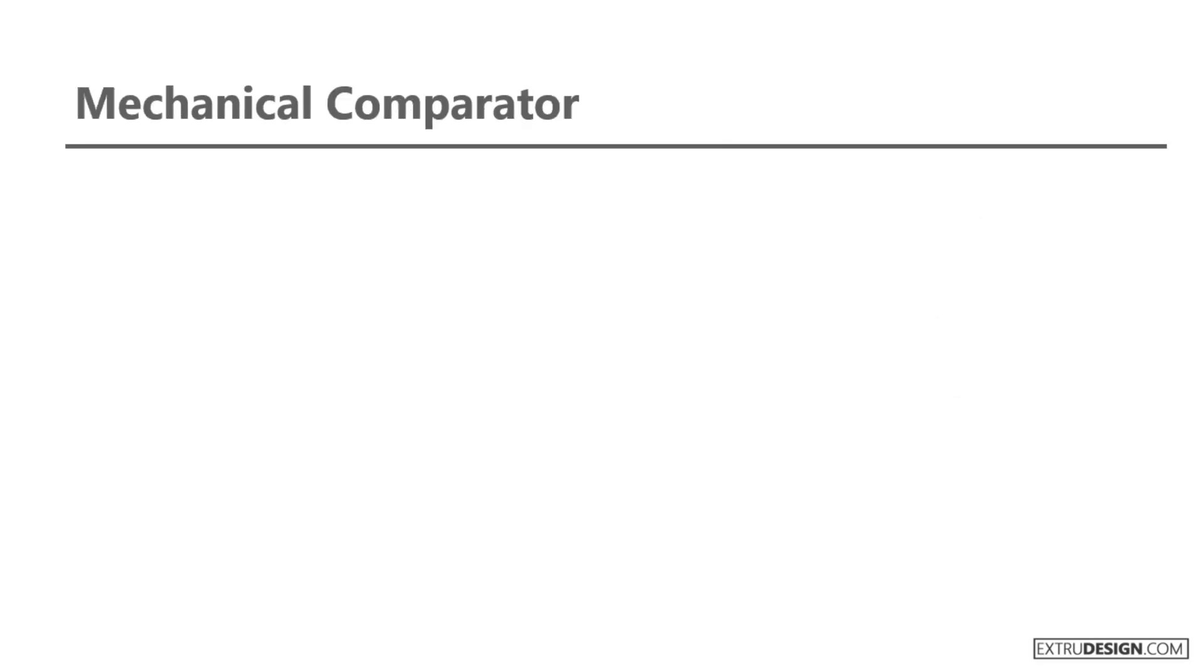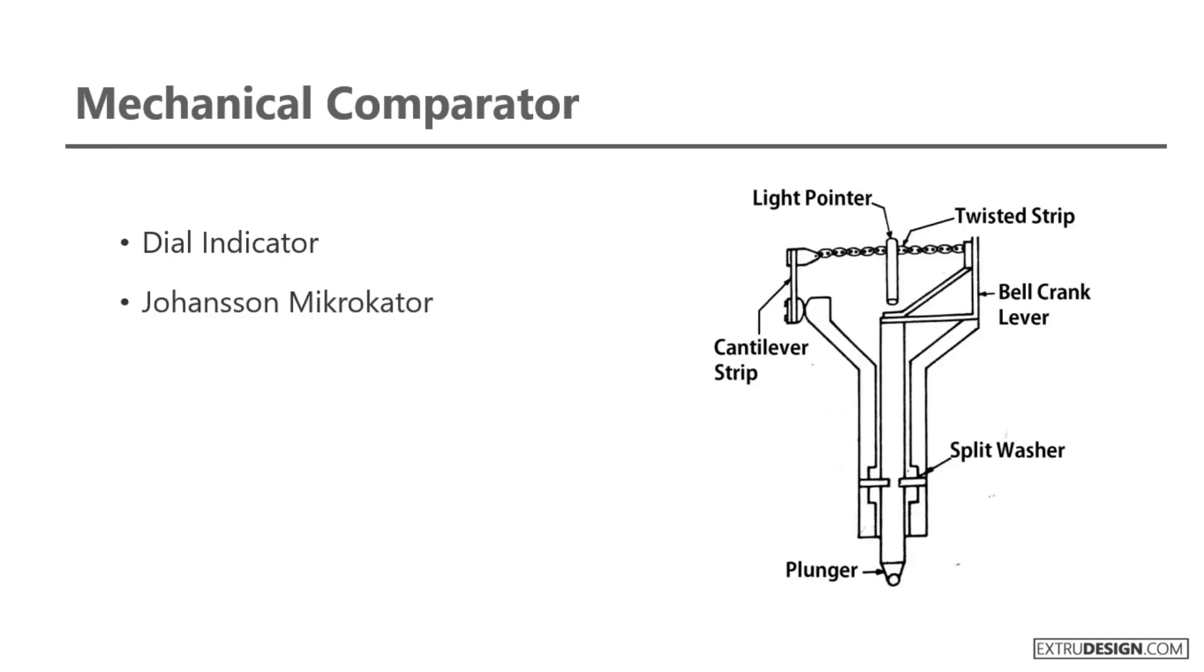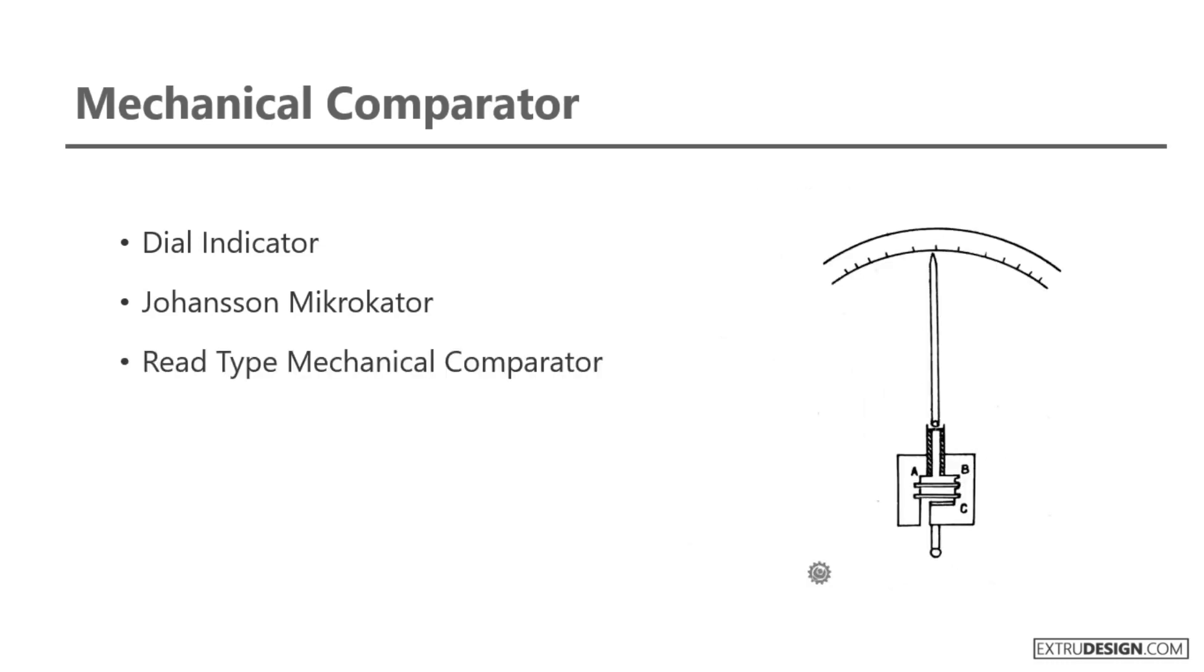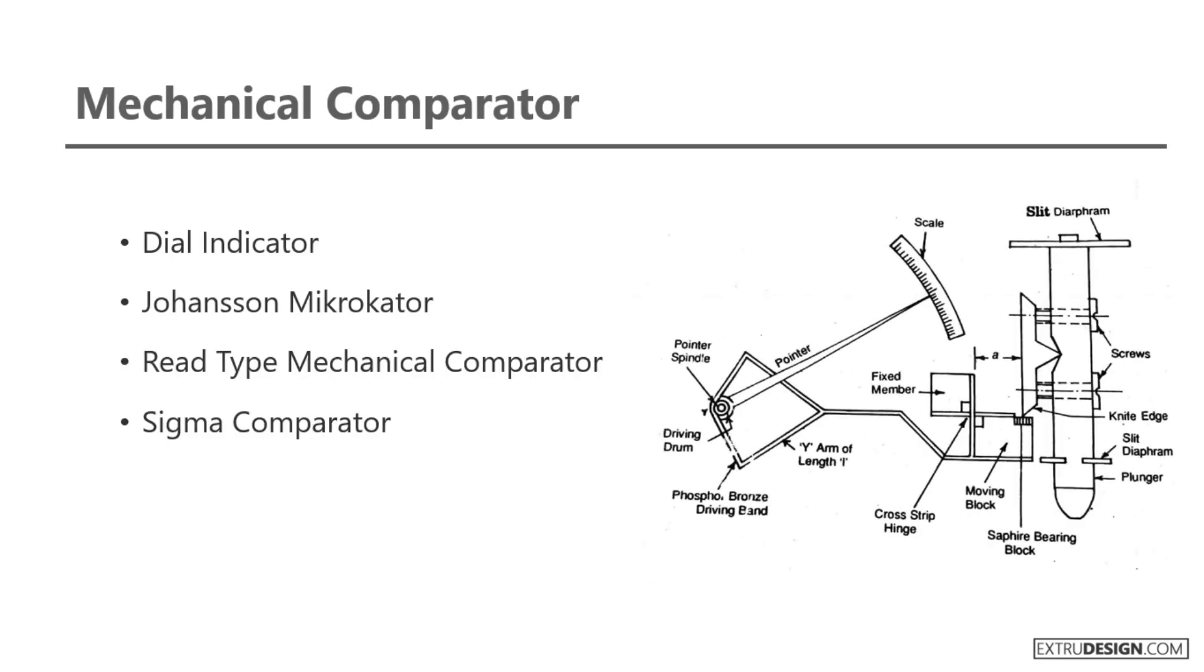There are four types of mechanical comparators available: dial indicator, Johnson microcator, reed type mechanical comparator, and sigma comparator. Let's see each of them in detail.